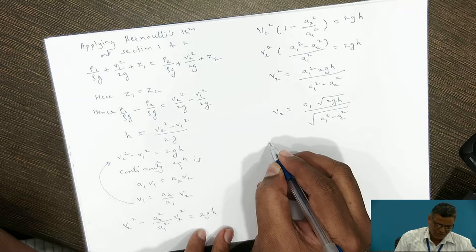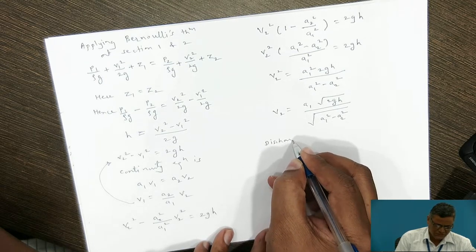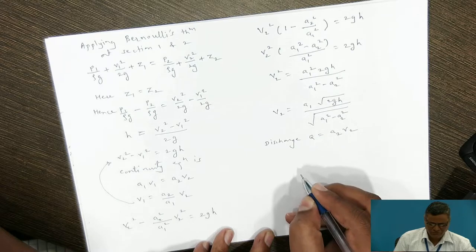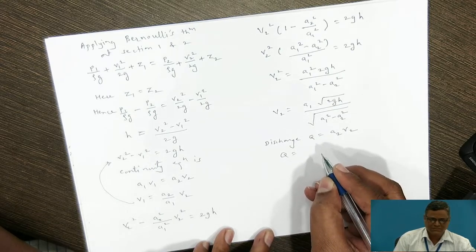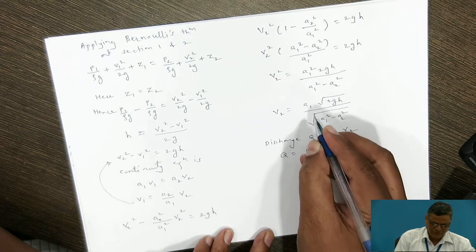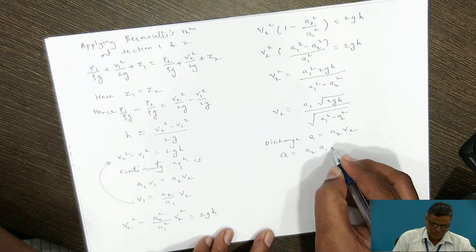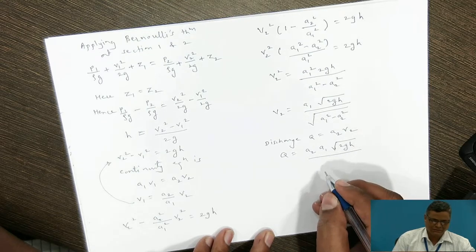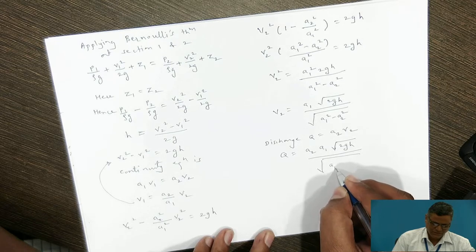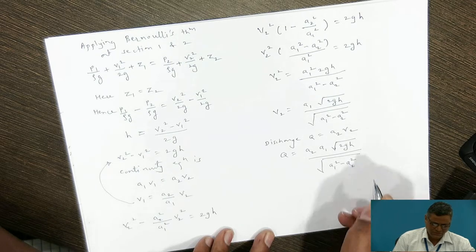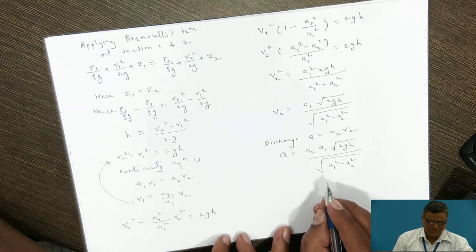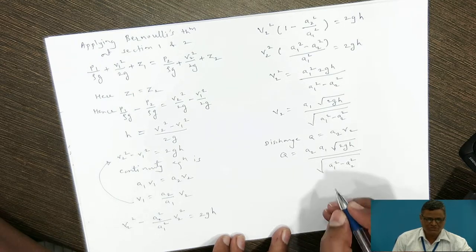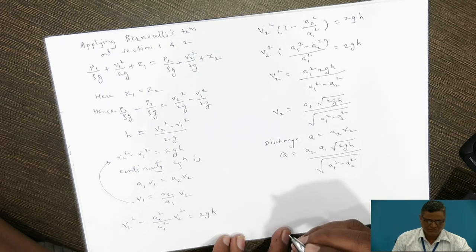The discharge Q = A2·V2, so substituting: Q = A1·A2·√(2gH) / √(A1² − A2²). We need to determine whether this is a theoretical or actual discharge.